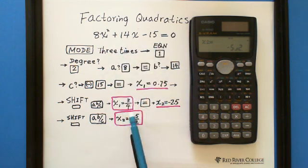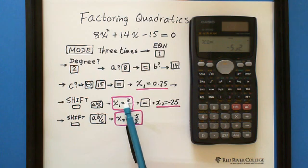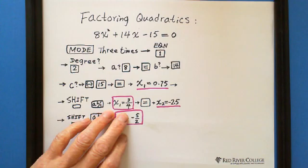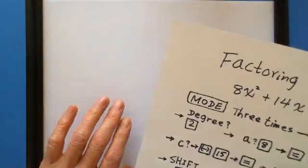The solutions you got are x equals 3 over 4 and x equals negative 5 over 2. Now we're using these two solutions to write the factoring form.